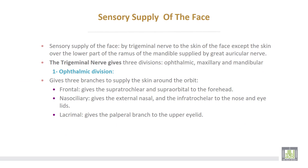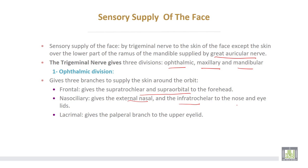The sensory supply of the face is from the trigeminal nerve to the skin of the face, except the skin over the lower part of the ramus of the mandible, which is supplied by the great auricular nerve. The trigeminal nerve has three divisions: ophthalmic, maxillary, and mandibular. The ophthalmic division gives three branches to supply the skin around the orbit: the frontal branch gives supratrochlear and supraorbital nerves to the forehead; the nasociliary gives external nasal and infratrochlear branches to the nose and eyelids; and the lacrimal branch gives a palpebral branch to the upper eyelid.